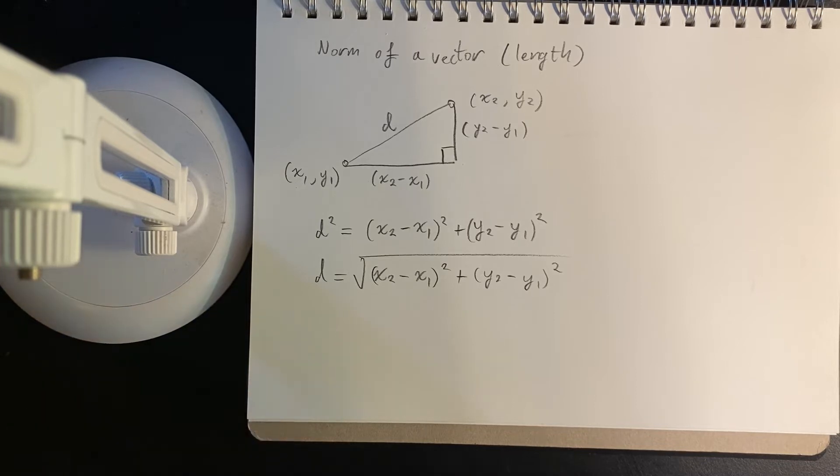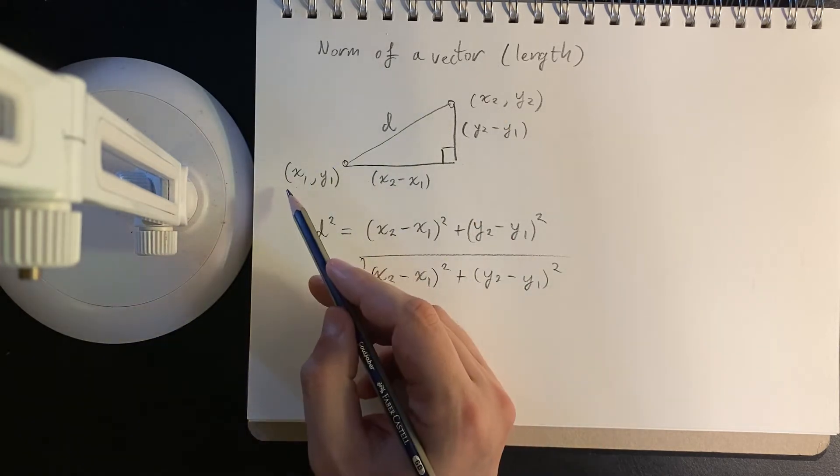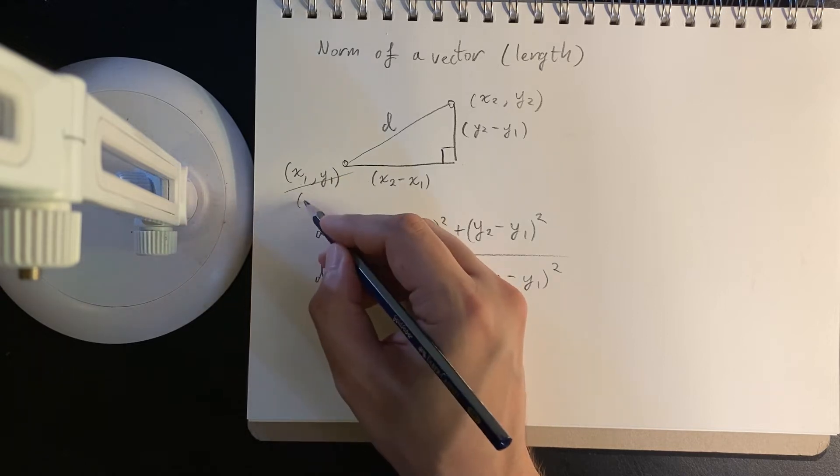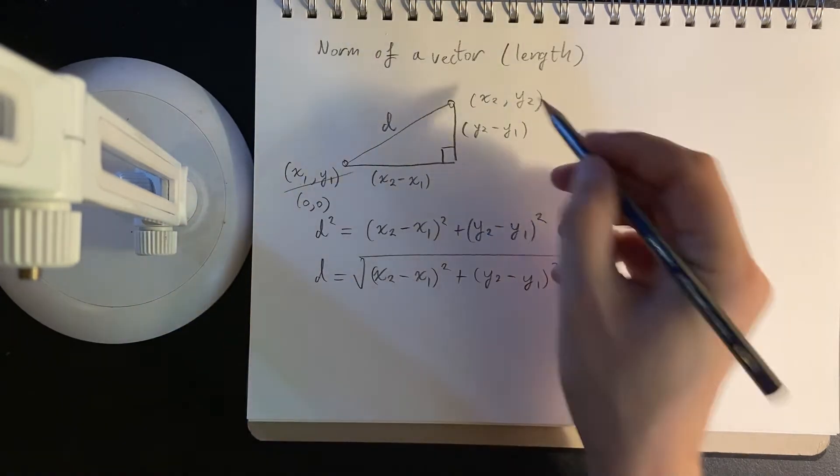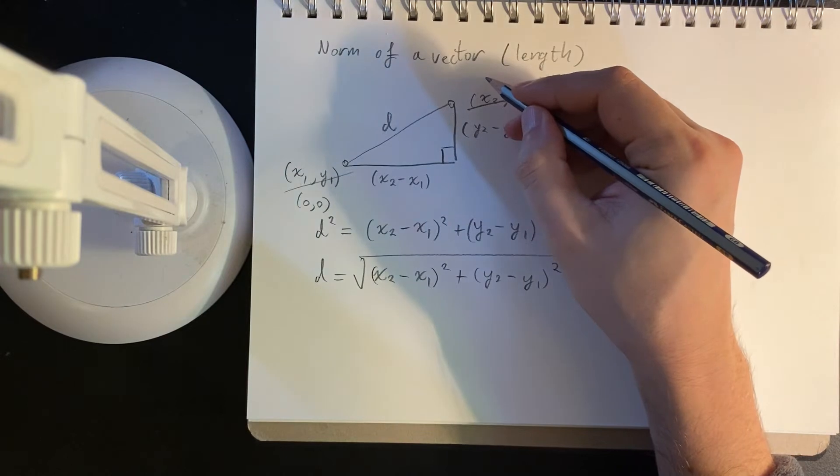So the same idea applies with a vector, because remember I said that a vector, if it's a point, it is a point away from the origin. So if I were to take this and say, well now this is the origin and this is,